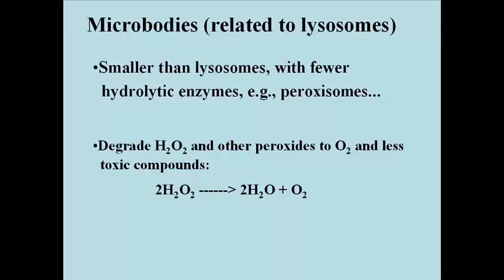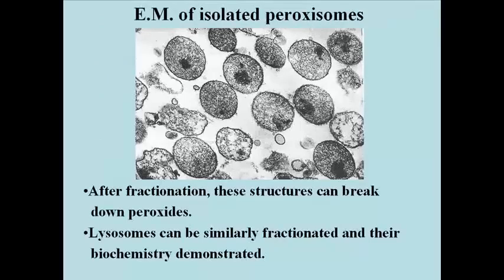One example is peroxisomes, which are particularly rich in enzymes called peroxidases that destroy highly toxic and destructive peroxides — like hydrogen peroxide — that are generated as a byproduct of some biochemical reactions. Here we see the chemical reaction in which two molecules of H₂O₂ are broken down into two molecules of water and a molecule of oxygen gas. An isolate of vesicles from cells expected to contain peroxisomes can be identified by showing that they break down added peroxides.